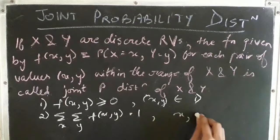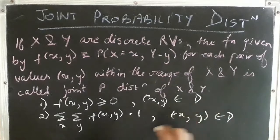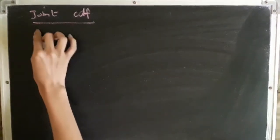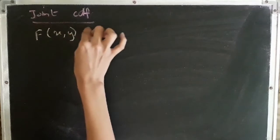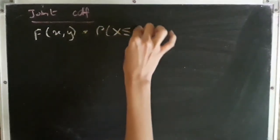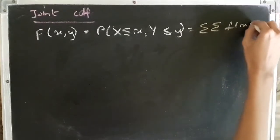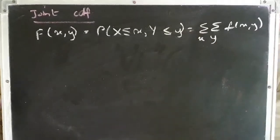This also holds true as long as x and y belong to the domain of the values that capital X and Y can take. The next theoretical concept is the joint cumulative distribution function. The joint CDF is defined as capital F(x, y) equals the probability of capital X being less than or equal to x and capital Y being less than or equal to small y, which is nothing but the double summation of f(x, y) first over the range of x and then over the range of y.